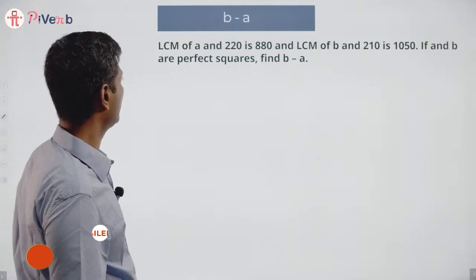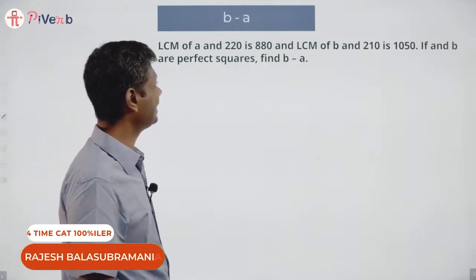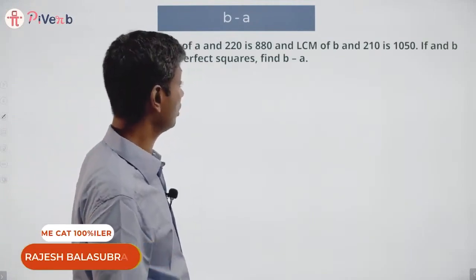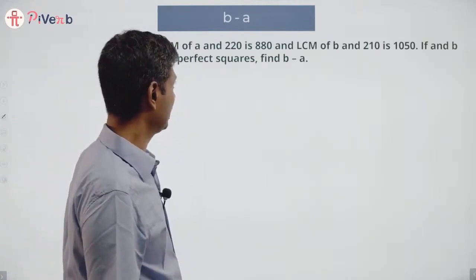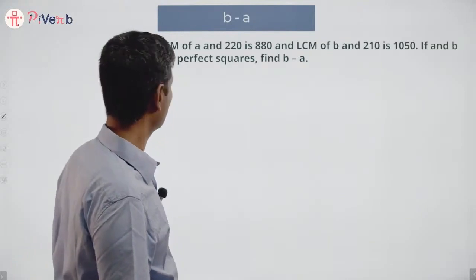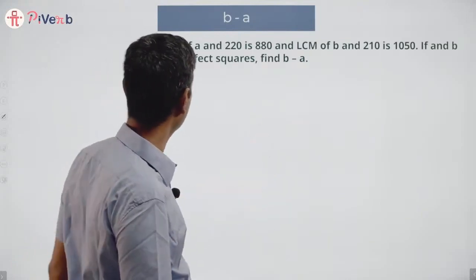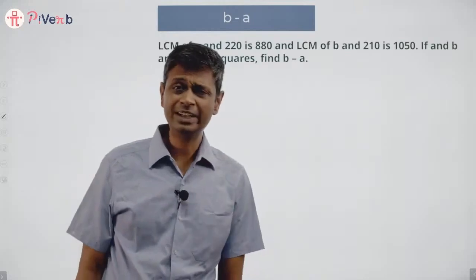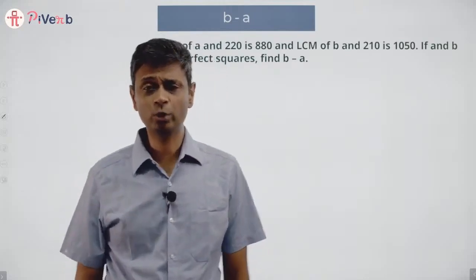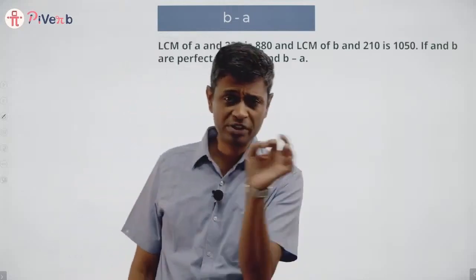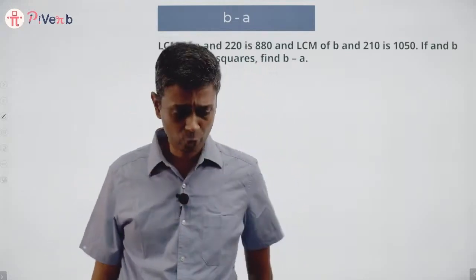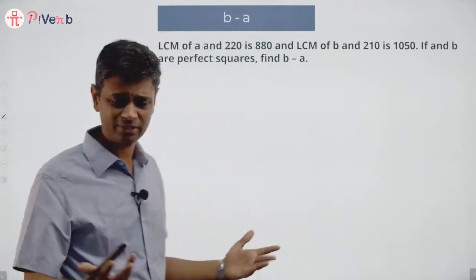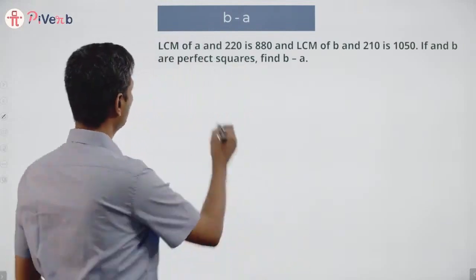LCM of a and 220 is 880, and LCM of b and 210 is 1050. If a and b are perfect squares, find b minus a. The common approach is long division, but the approach I really like is to prime factorize.